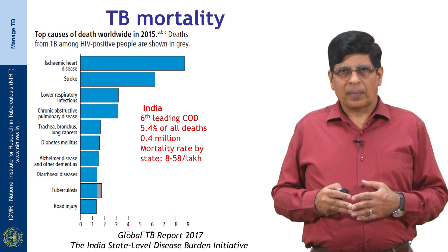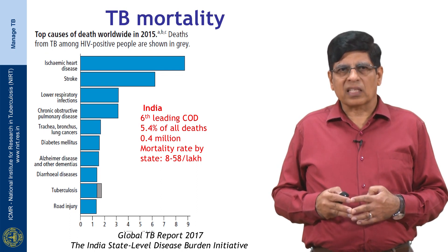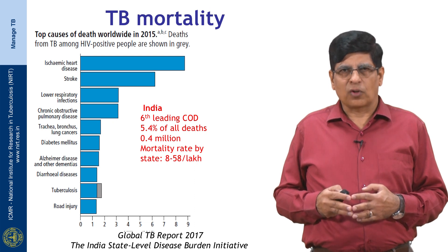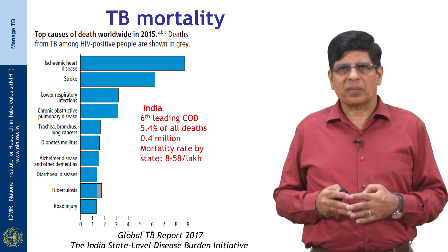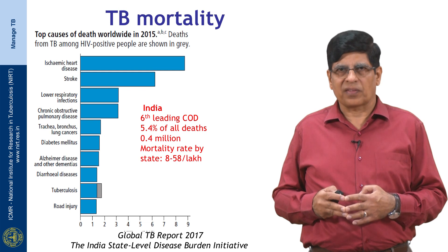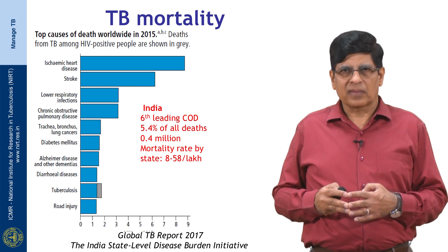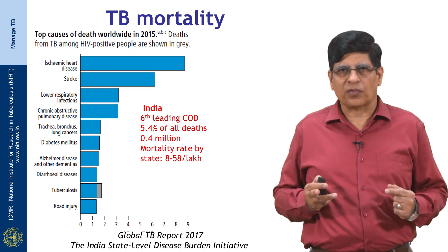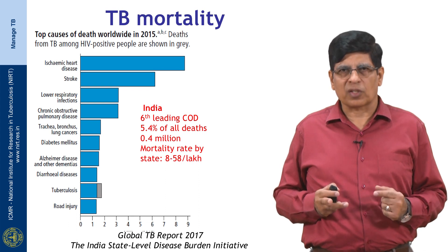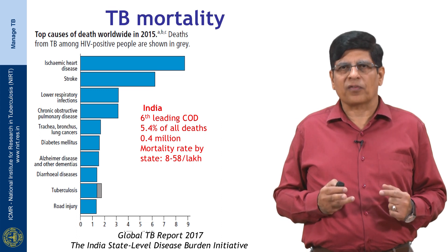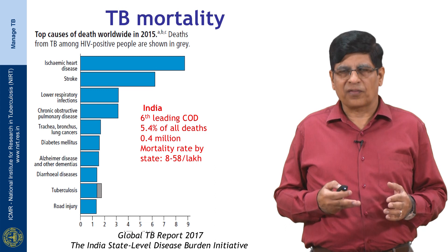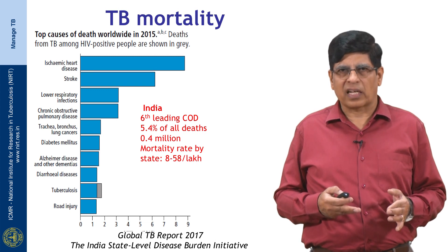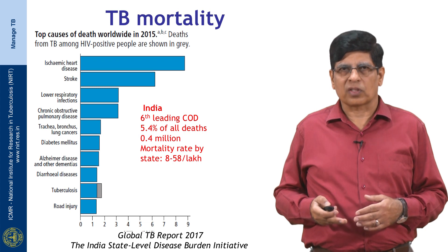At the global level, TB ranks ninth as a cause of mortality, with about 1.3 million deaths attributed to TB and an additional 0.4 million TB-associated deaths in people living with HIV. In India, TB is the sixth leading cause of death, accounting for 5.4% of all deaths, with more than 400,000 people dying every year. The mortality rate is highly variable from state to state, from as low as 8 per 100,000 in Kerala to 58 per 100,000 in Uttar Pradesh.